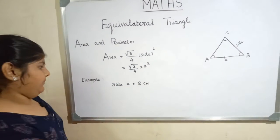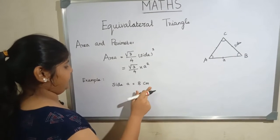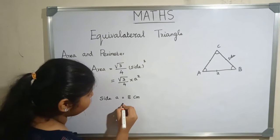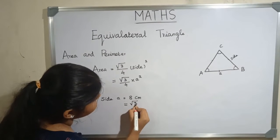Now we have to substitute the formula: root 3 by 4 multiply, here a is 8 centimeters, so 8 centimeters square.